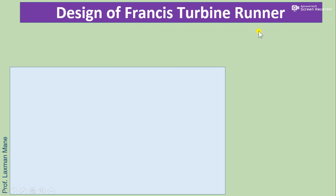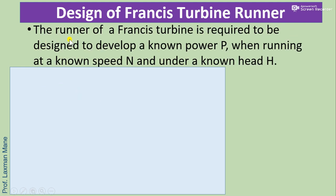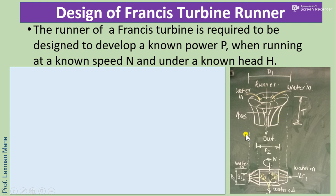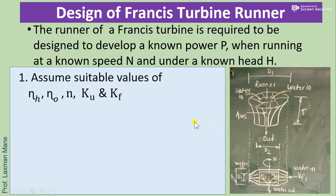Design of Francis turbine runner: the runner is required to develop a known power P, at known speed N, under known head H. Design means finding the size of runner, dimensions, and vane angles. Step 1: assume suitable values of hydraulic efficiency, overall efficiency, number of vanes, speed ratio, and flow ratio.